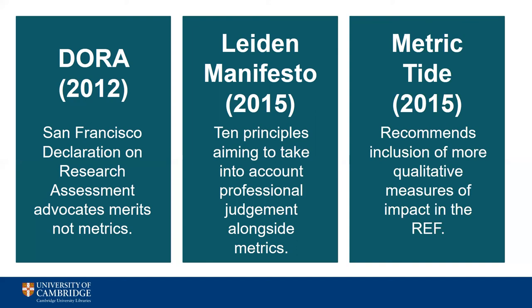Finally, all the documents make the point that the place of publication — the venue of publication, one of the levels in the metrics model we looked at earlier — should not be used as a surrogate measure of impact, but that instead research should be judged on its own merits.